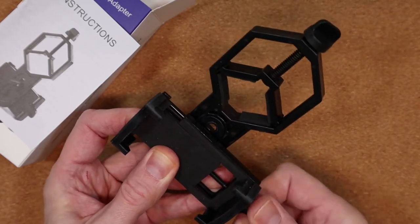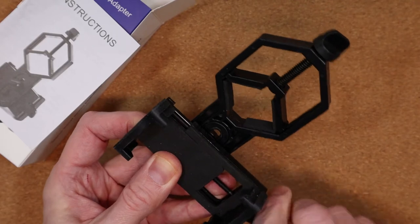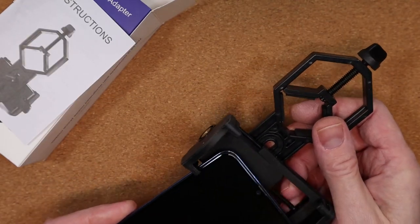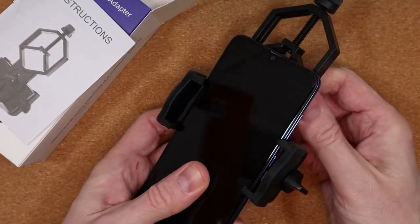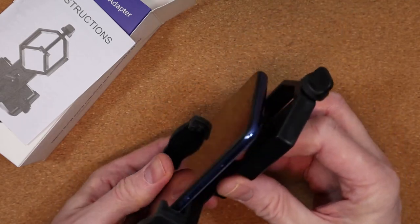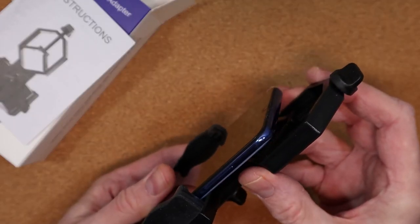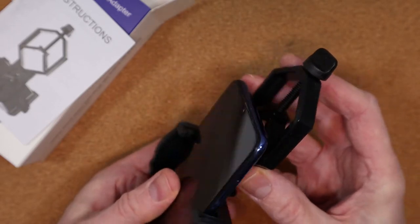The important thing here is to avoid clamping any buttons on the side of the phone. Once that's done, insert the phone and tighten up the clamp so that it's held securely. The last thing you want is for your phone to fall out when you're adjusting the controls of your microscope. That's going to hurt.